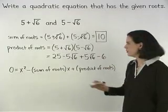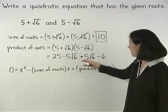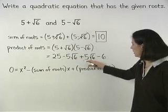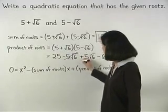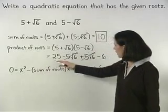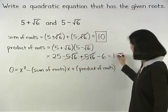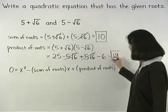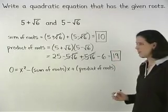Next, notice that the minus 5 root 6 and plus 5 root 6 cancel out and 25 minus 6 is 19. So the product of the roots is 19.